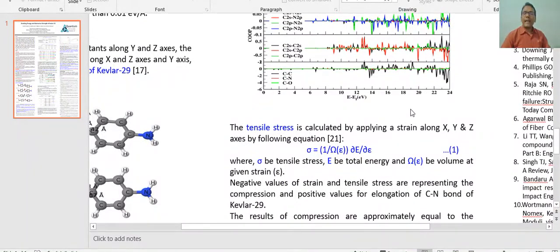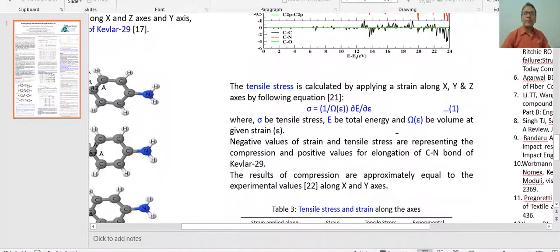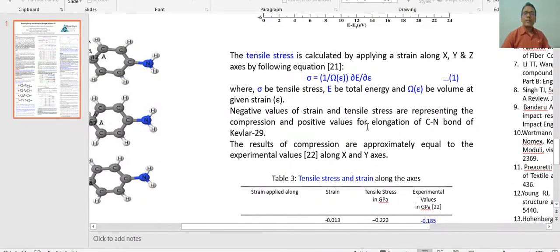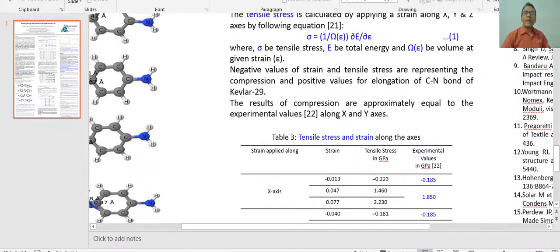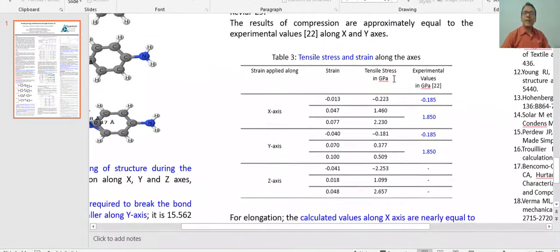Tensile strength is calculated by using this formula. We have sigma, the tensile strength, which is the total energy, and this omega is the volume at that particular strain. For detailed calculation of this, we have applied stress along X, Y, and Z directions.